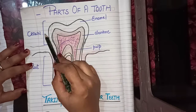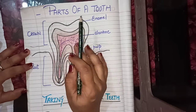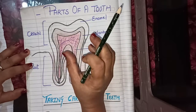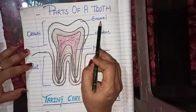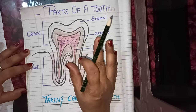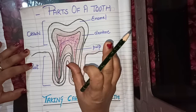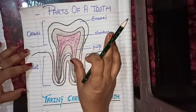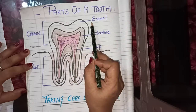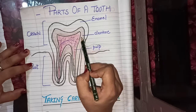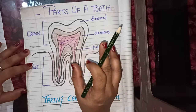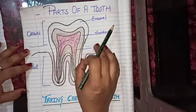This crown is covered with a hard protective layer called enamel. This enamel is the hardest substance. Underneath the enamel there is dentine, which is not so much tough.